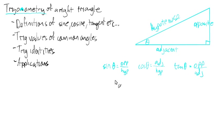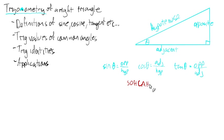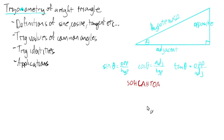There's a mnemonic device to help us remember: sine is opposite over hypotenuse, cosine is adjacent over hypotenuse, and tangent is opposite over adjacent. If we say that real fast, it's SOH-CAH-TOA. So if you can't remember which function uses opposite and hypotenuse, think SOH — sine, opposite, hypotenuse — and there you go.